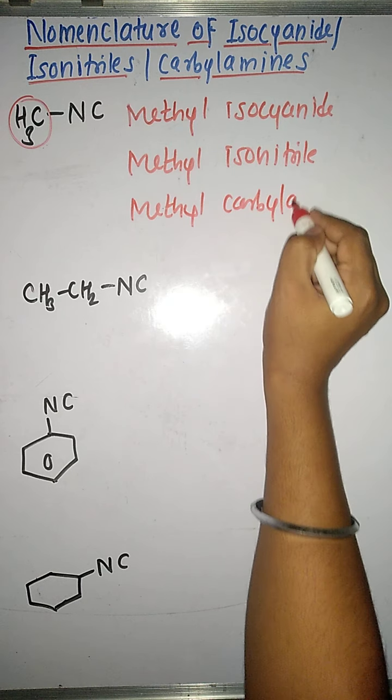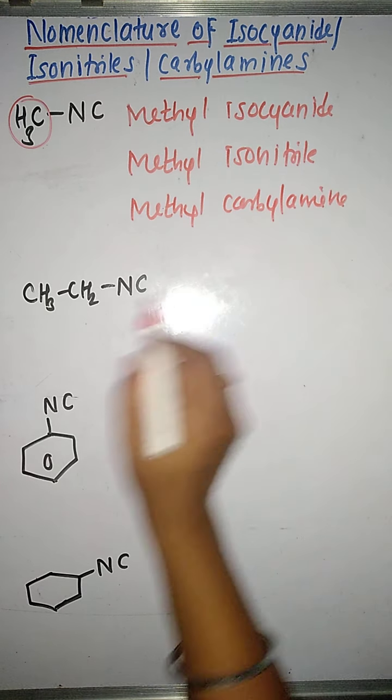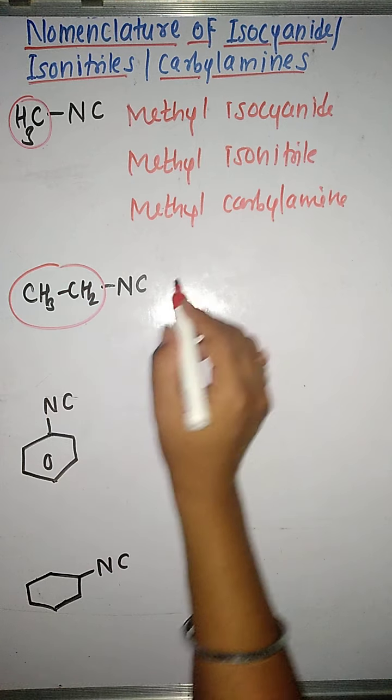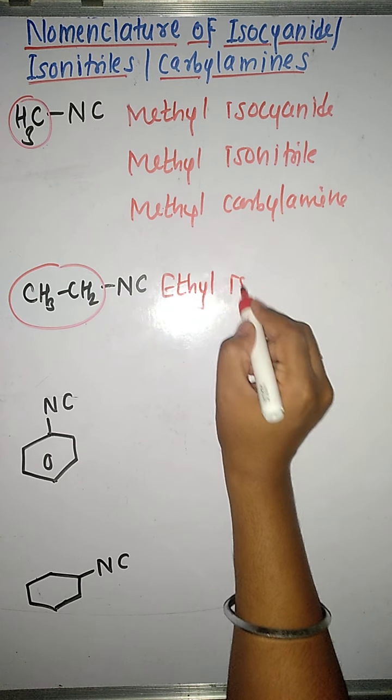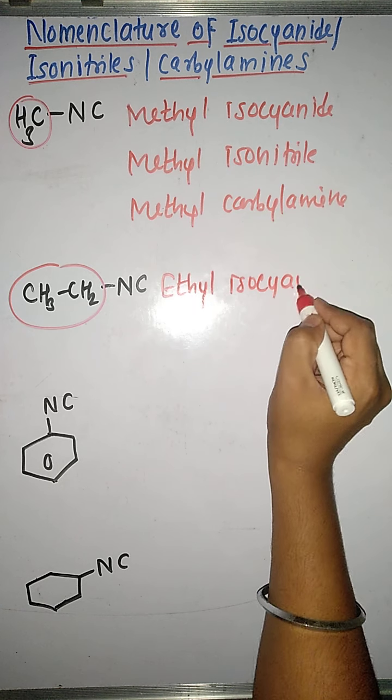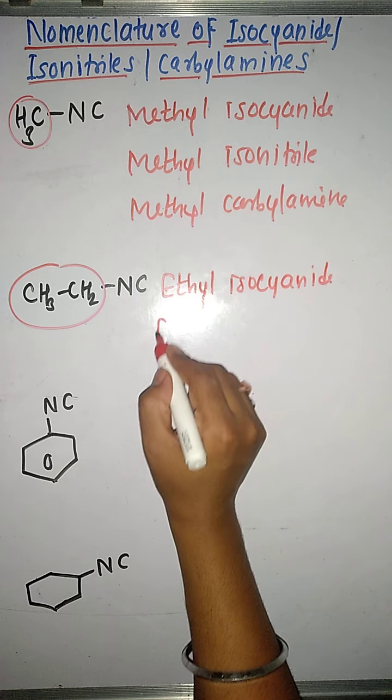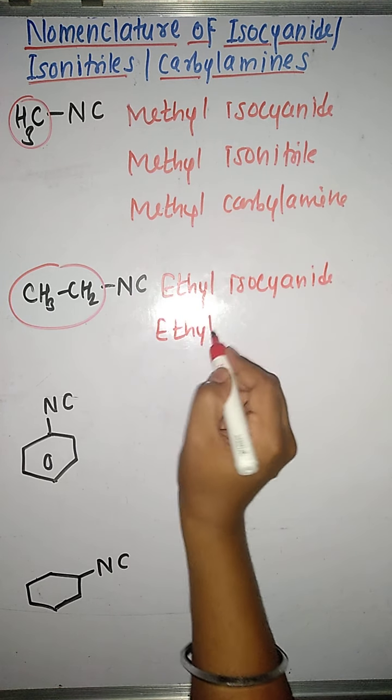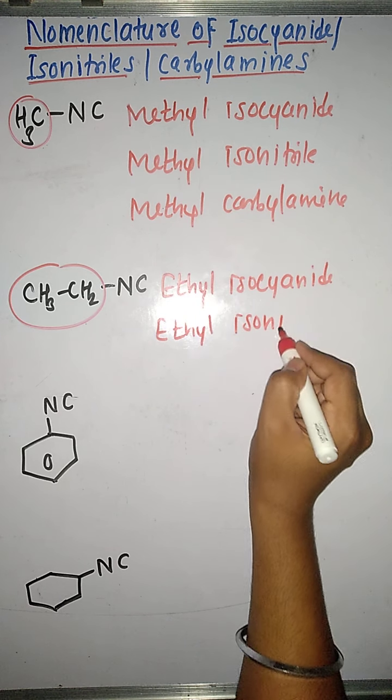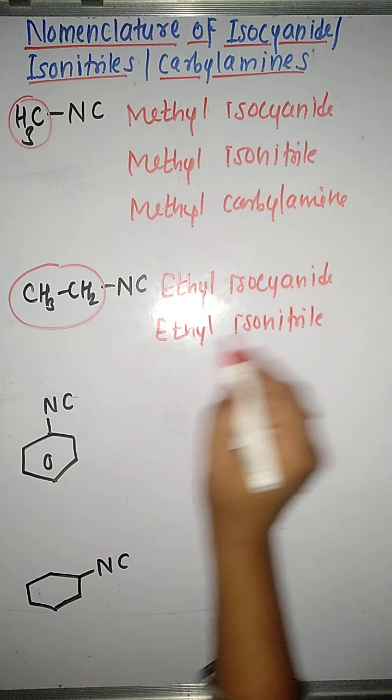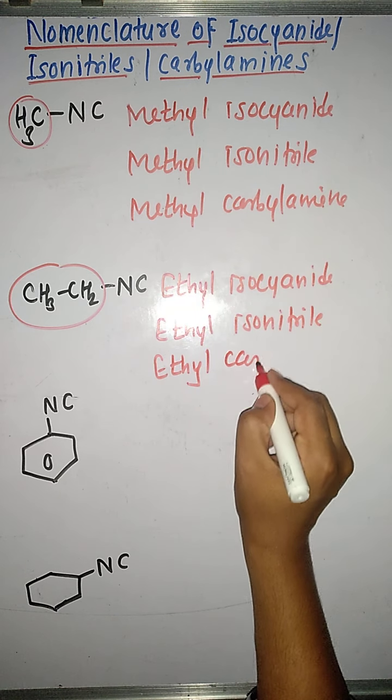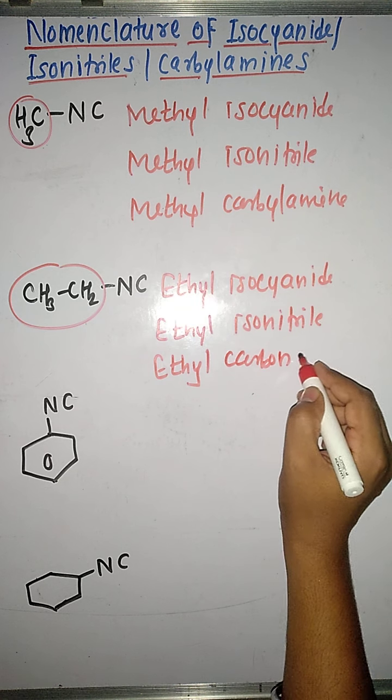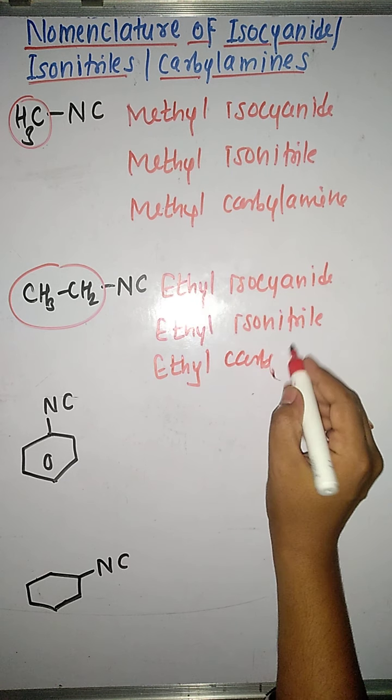In the same way we are having ethyl group here. So we will write the word ethyl first. Then as usual the word isocyanide can be written, or we can also write the word isonitrile, or carbilamine. So it is ethyl isocyanide, ethyl isonitrile, or ethyl carbilamine.